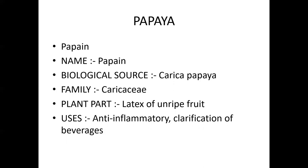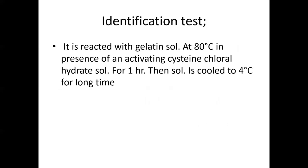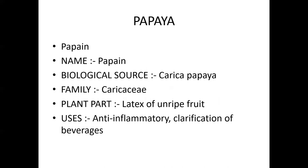Papaya/papain source is a dried latex obtained from Carica papaya, family Caricaceae. We have to get the latex from the unripe fruits of Carica papaya — we make incisions to the unripe fruit, the latex exudes out, we collect it and treat with some chemical agents.